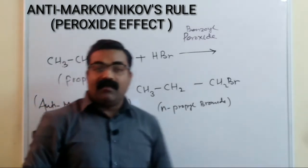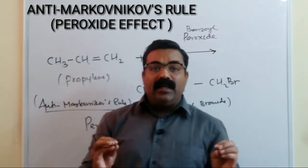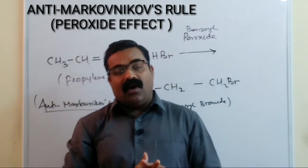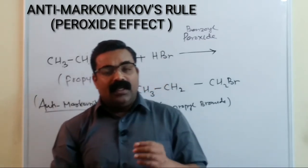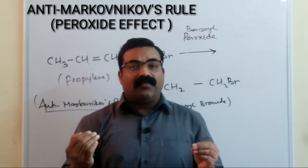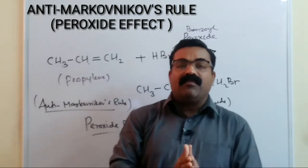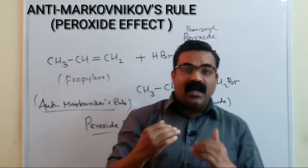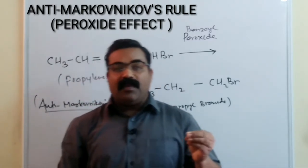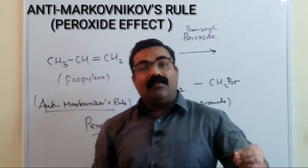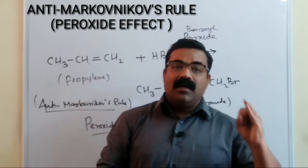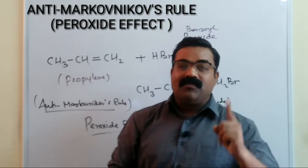So what we have learned today are two very important reactions for both class 11 and class 12. One is Markovnikov rule and the second is anti-Markovnikov rule, also called the peroxide effect. Quick revision: whenever a hydrogen halide reacts with an asymmetrical alkene, the negative part of the addendum goes to the carbon with fewer hydrogen atoms — that is Markovnikov rule. If the reaction takes place in the presence of a peroxide, the negative part goes to the carbon with the maximum number of hydrogens — that is anti-Markovnikov rule or the peroxide effect.